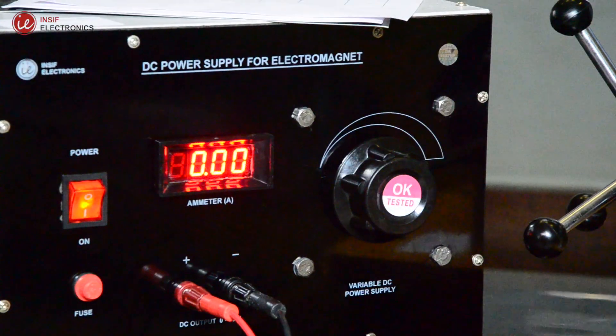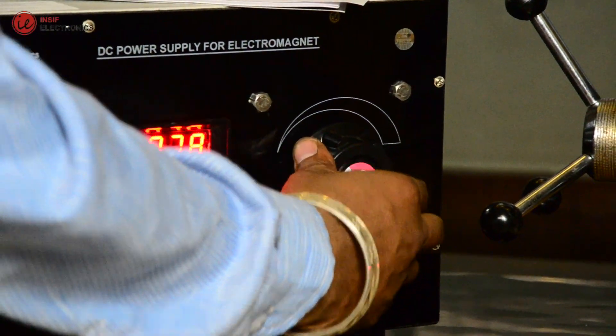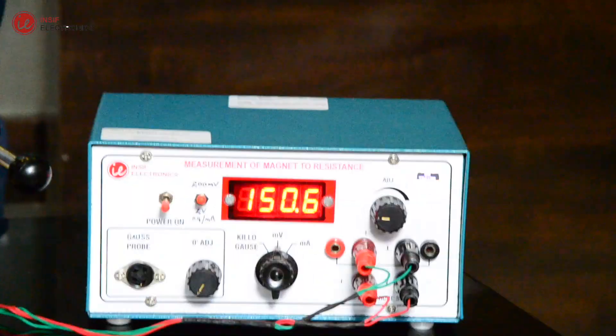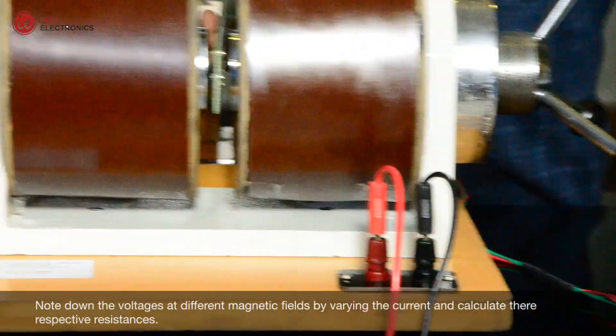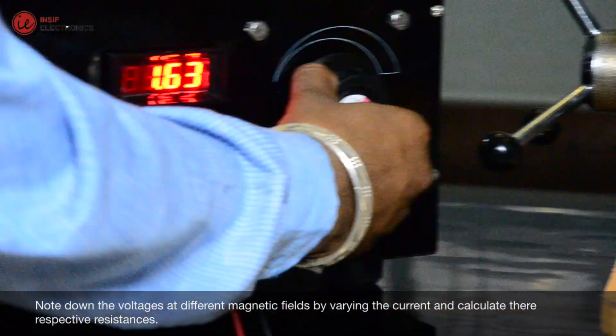Place the sample in between the pole pieces of the magnet such that the magnetic field is perpendicular to the direction of the current. Note down the voltages at different magnetic fields by varying the current and calculate their respective resistances.